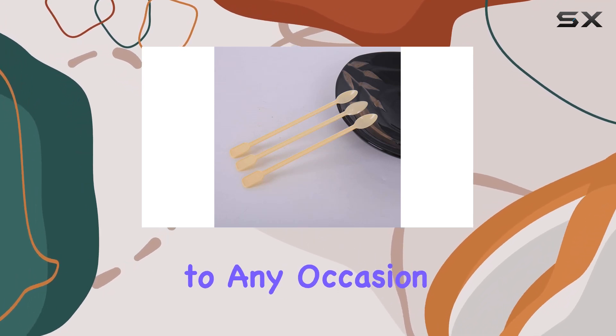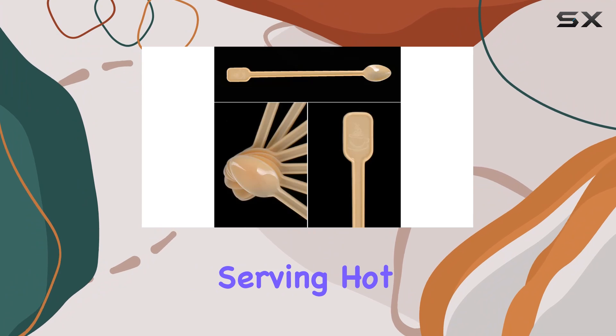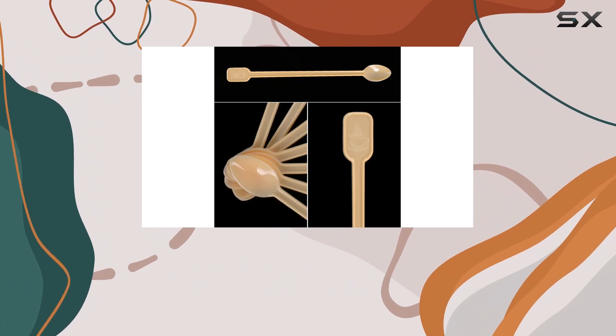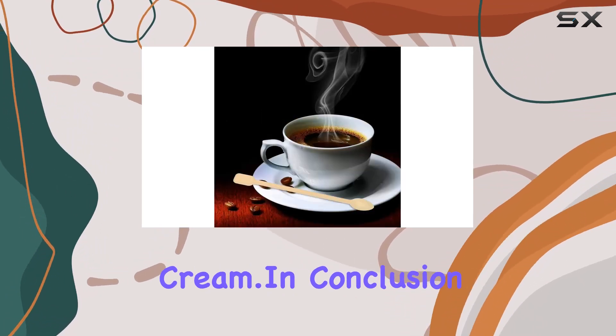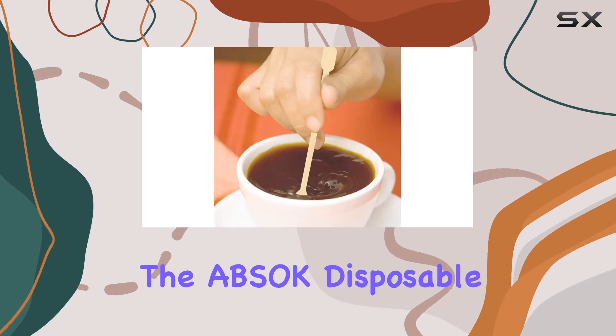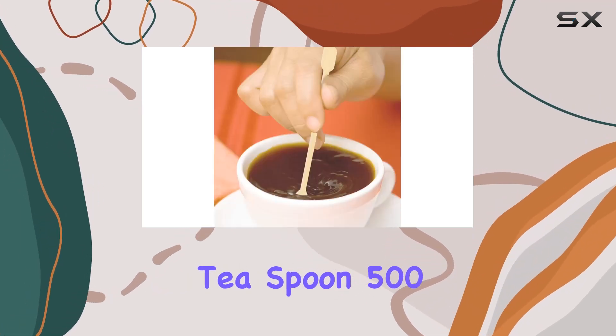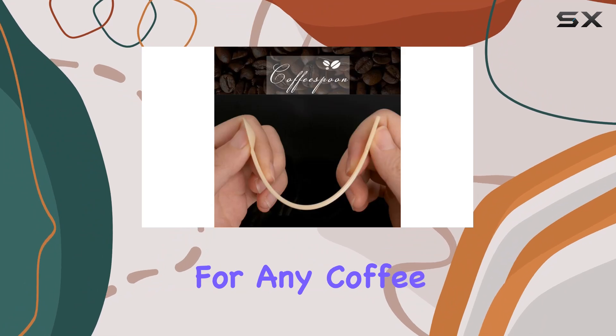Whether you're serving hot or cold beverages, these stirrers are perfect for mixing in milk, sugar, or cream. In conclusion, the Absock Disposable Tiny Coffee Teaspoon 500-pack is a must-have for any coffee lover or host.